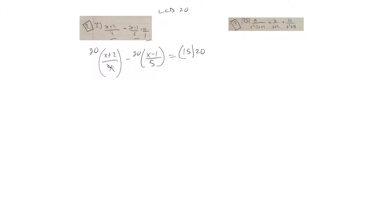So this one here, 4 goes into 20 5 times, so this first term turns into 5 times x plus 2. 5 goes into 20 4 times, so this term becomes minus 4 times x minus 1. And 15 times 20 is 300.